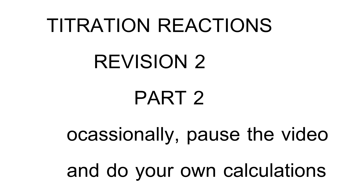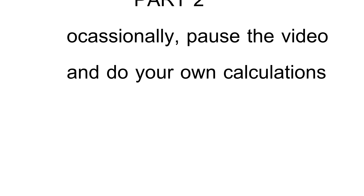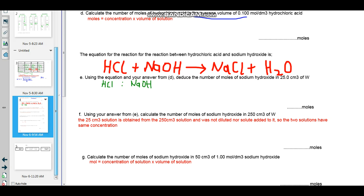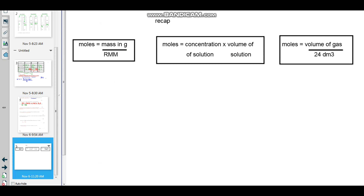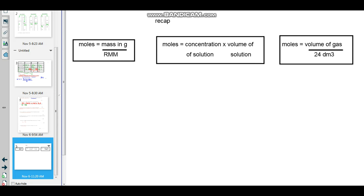The first question says: calculate the number of moles of hydrochloric acid in the average volume of 0.100 moles per decimeter cubed hydrochloric acid. Before we go through this calculation, let us very quickly do a quick recap. I want you to remember that there are these three core formulae that we use with calculations involving the mole.